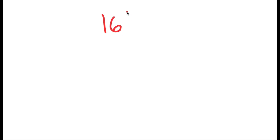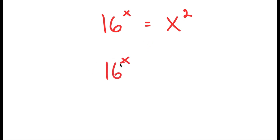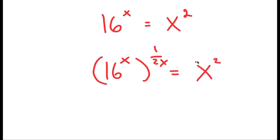In this video, I'm going to solve the equation 16 to the power of x is equal to x to the power of 2. To solve this, I'm going to first start by taking the power of 1 over 2x on both sides. So I get 16 to the power of x to the power of 1 over 2x is equal to x to the power of 2 to the power of 1 over 2x.